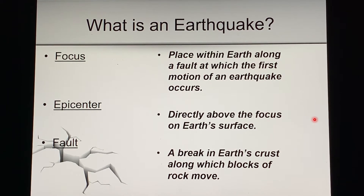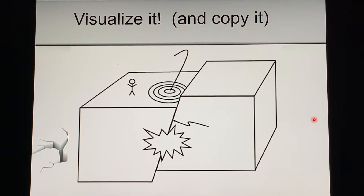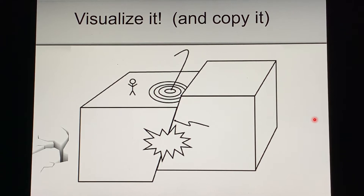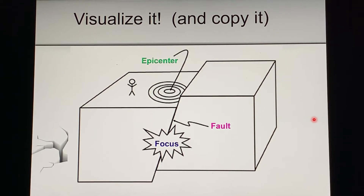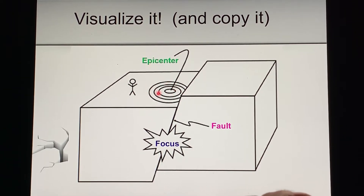That's why they always report the epicenter on the news when they talk about an earthquake occurring in California, eastern Tennessee, Japan, or Turkey — because people live on the surface, not inside the earth. The worst damage will be in the area closest to where the energy is released. The fault is the actual break in the earth's crust where the movement occurs. In the diagram: the fault is where the rocks move, the focus is where the energy is first released, and the epicenter is the area right above the focus — where people will feel it first and most.